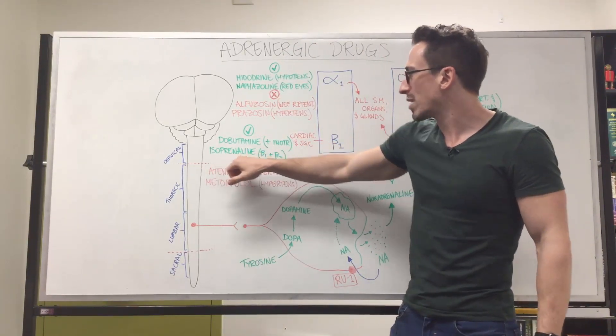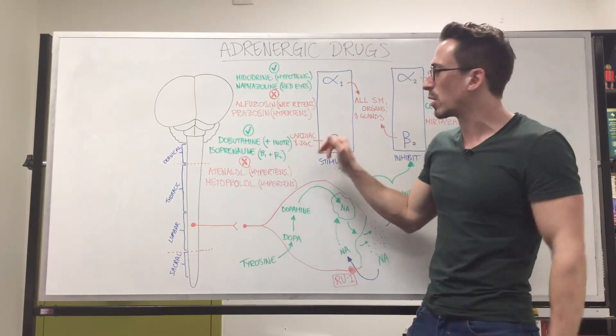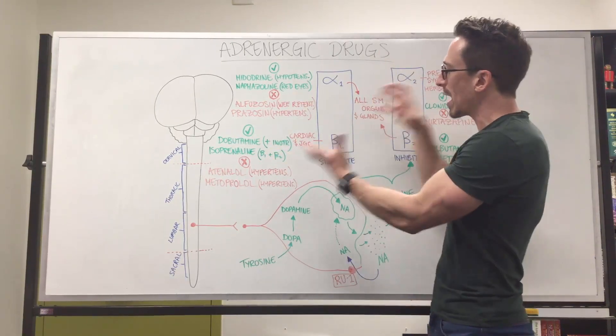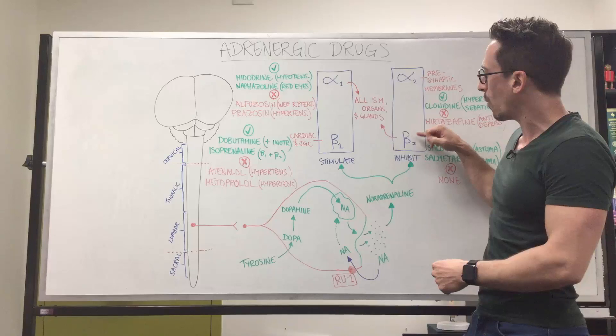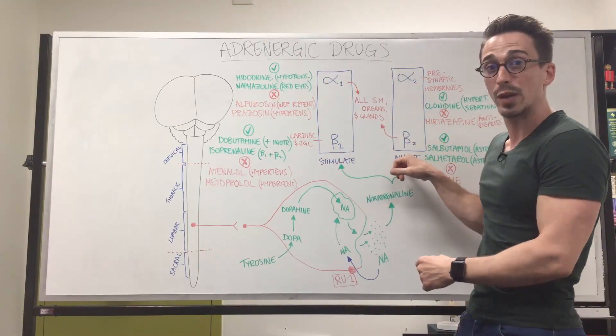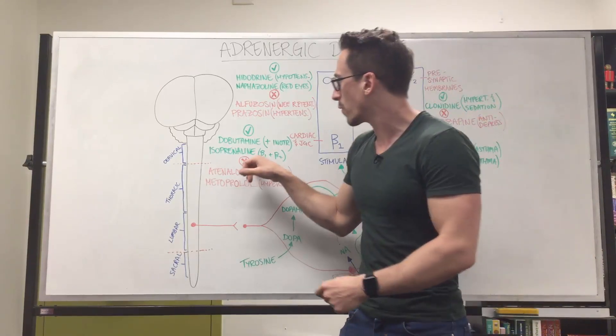Now we've also got isopreniline and it's not a selective beta-1. It actually stimulates beta-1 and beta-2, which means it tells the heart to contract harder, but also tells the airways, which is controlled by beta-2 to relax and open up. Why relax? Because beta-2 inhibits airways.